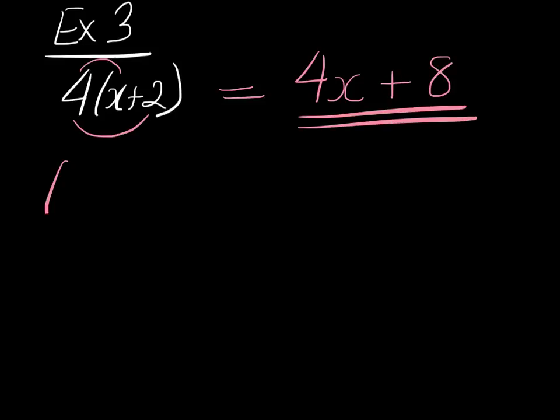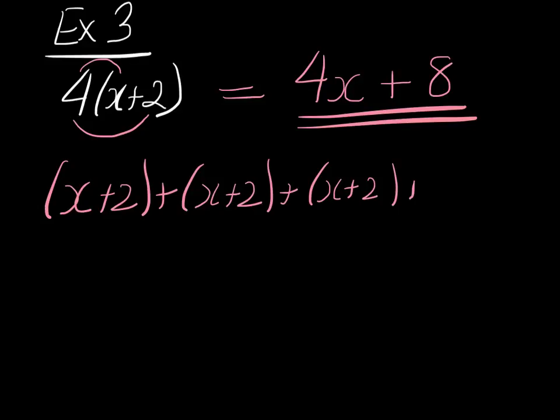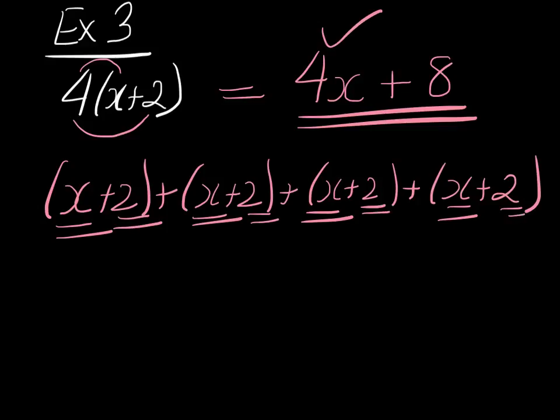And obviously, if we had x plus 2 plus x plus 2 plus x plus 2 plus x plus 2, if we had done it the long way, we would have got 1, 2, 3, 4 x's and 2, 4, 6, 8 as well.